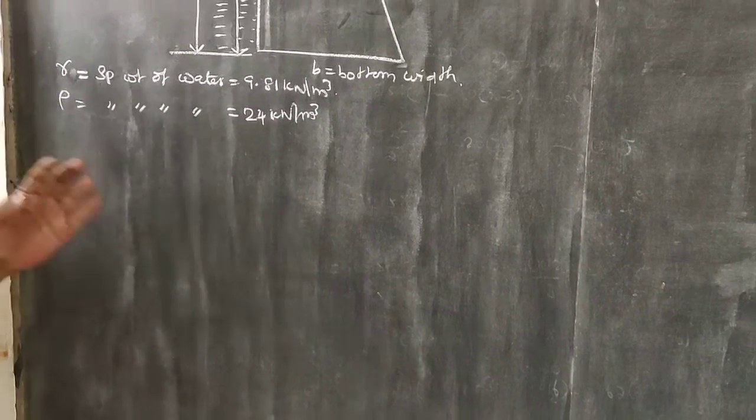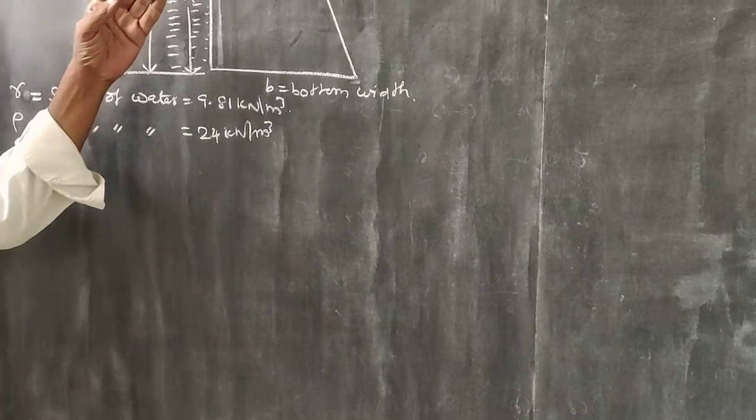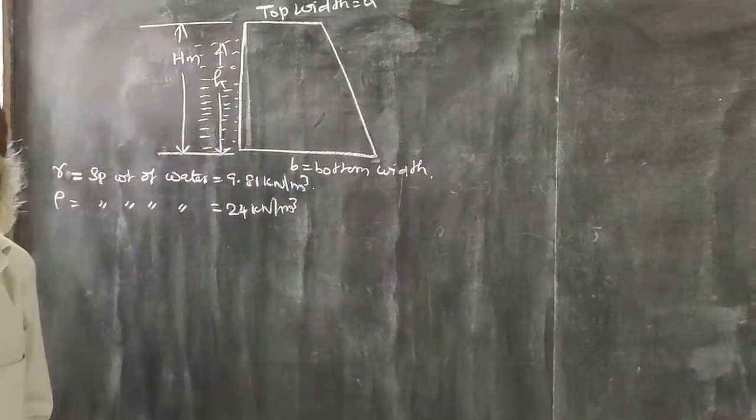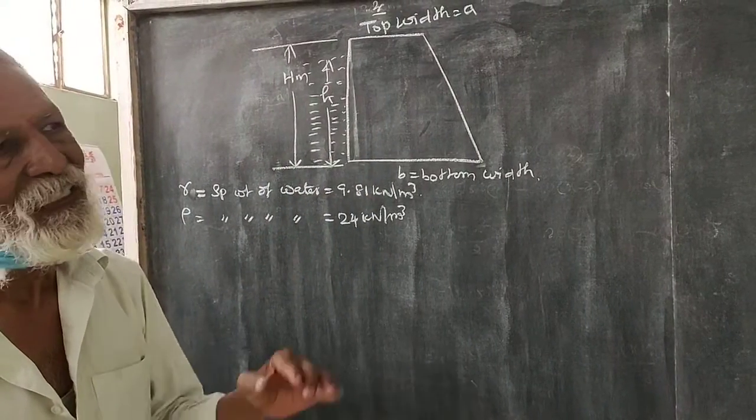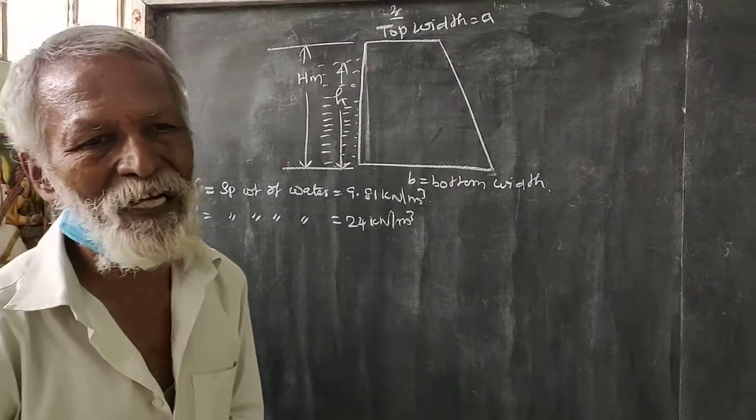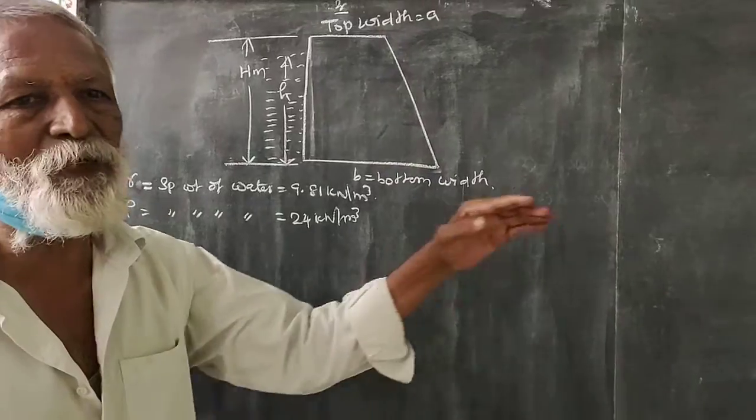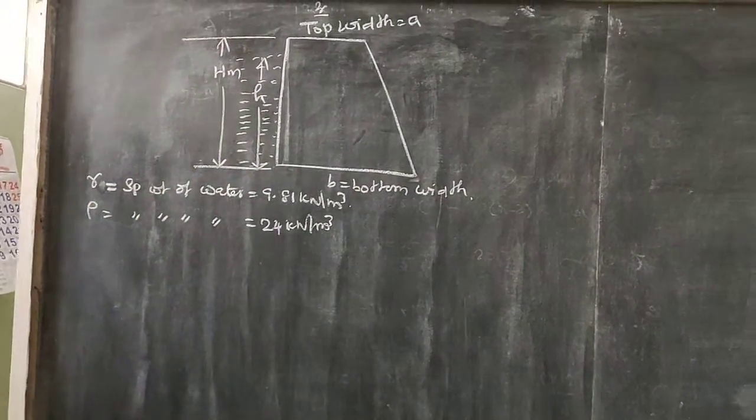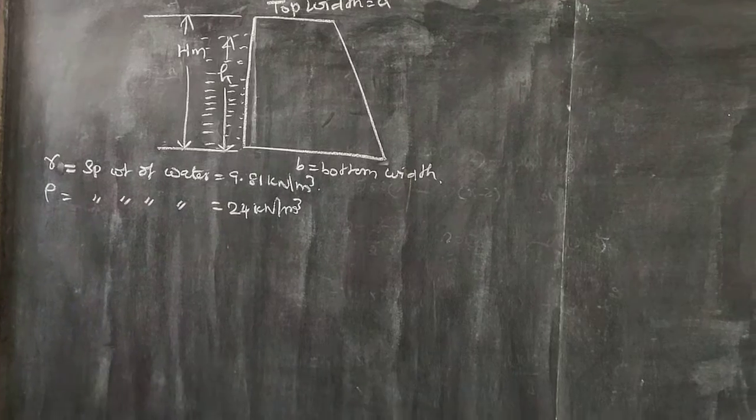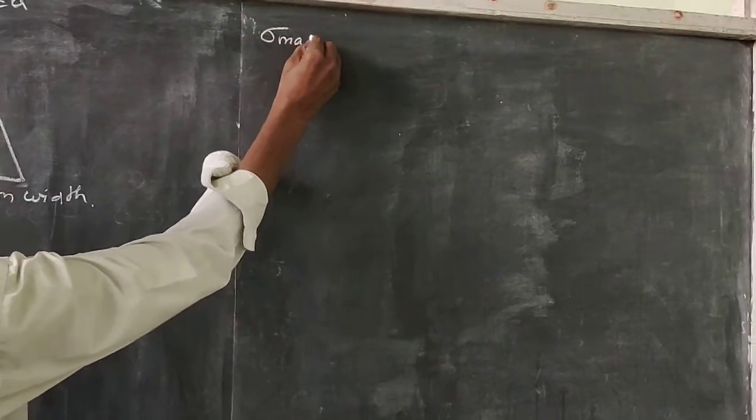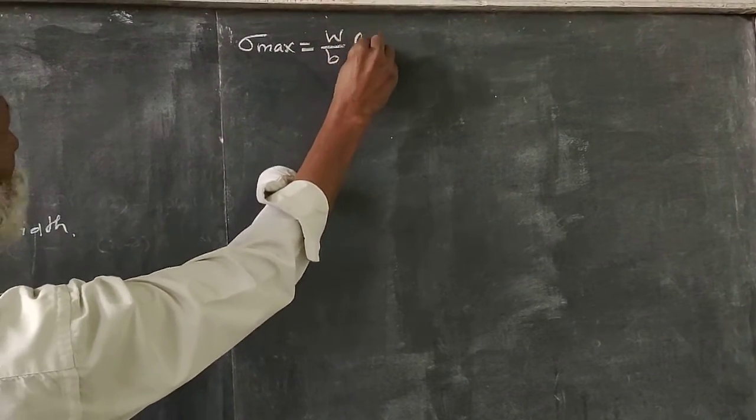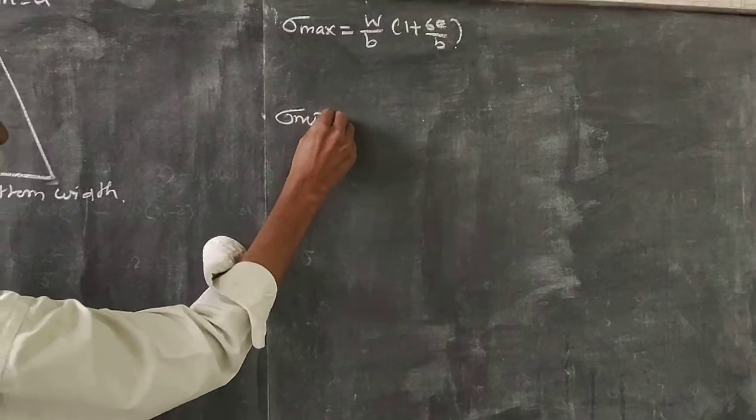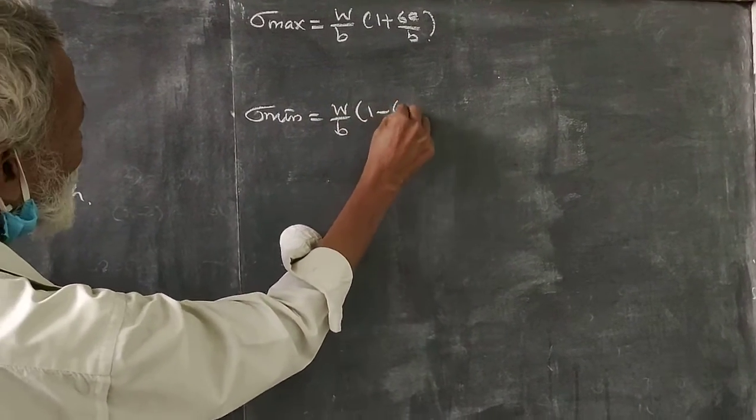If you have maximum stress or minimum stress, then you can check the stability. For tension or sliding, you can check these. The formulas are: sigma max equals W by B into 1 plus 6e by B, and sigma min equals W by B into 1 minus 6e by B.